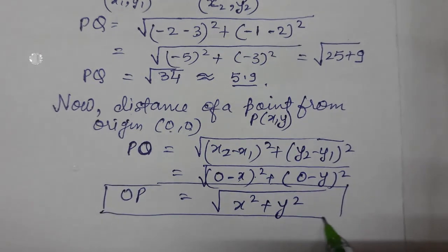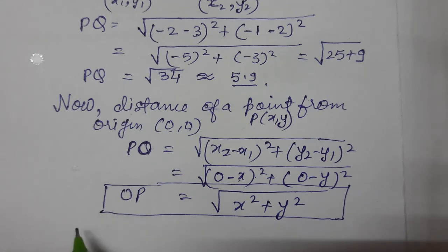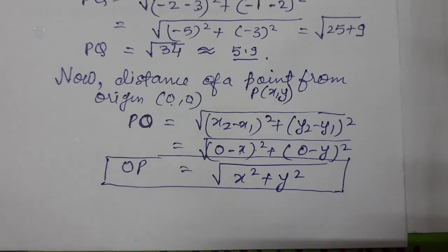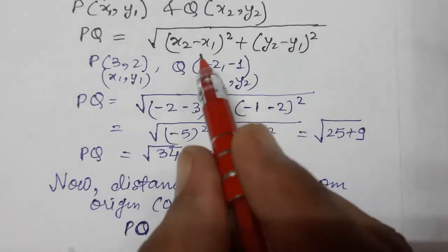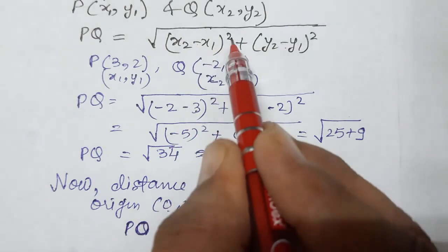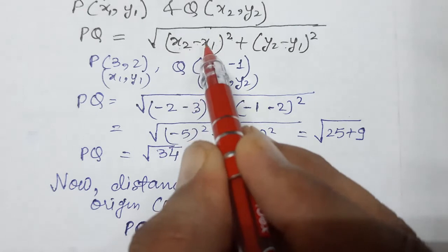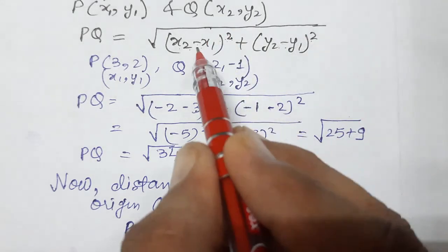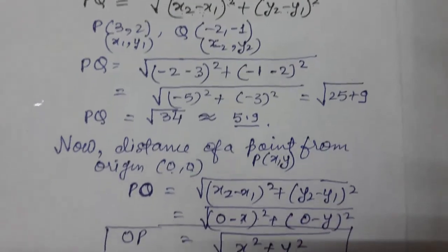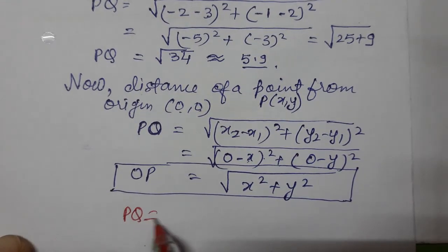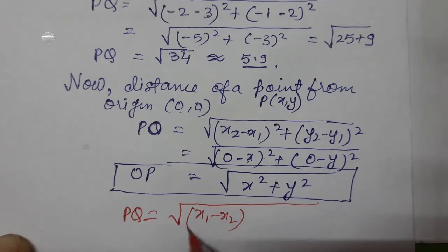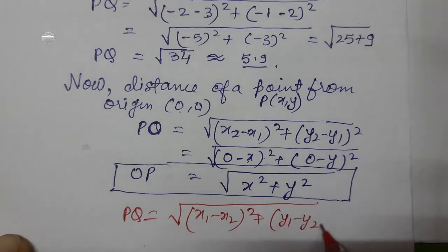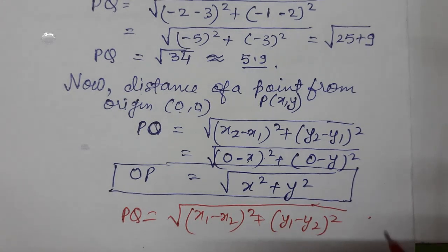One more thing — if you ever need to find the distance, we can write the formula in both ways. We wrote x2 − x1 whole square plus y2 − y1 whole square. Since there is a square, whether negative or positive, the result is always positive. So we can also write it as: under root of (x1 − x2)² + (y1 − y2)². In any way, this is the distance formula. I hope the topic is clear to all of you. Thank you so much for watching the video.